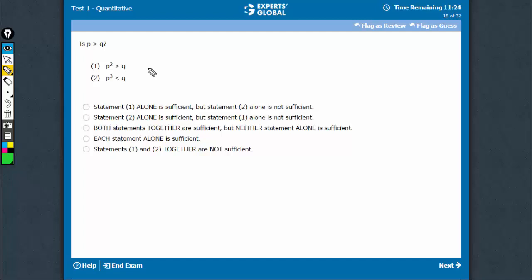In such questions, I always recommend trying to get both a yes and a no answer. For example, in this case, for P = 2, Q = 3, P² is greater than Q, but P is not greater than Q, so we get the answer as no.